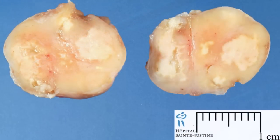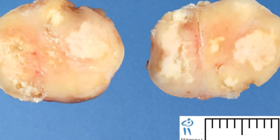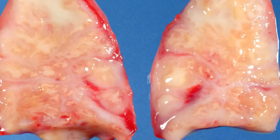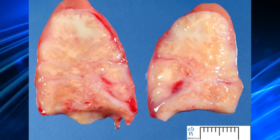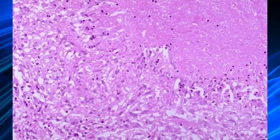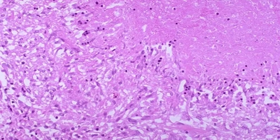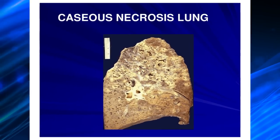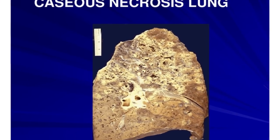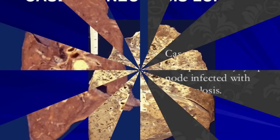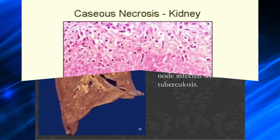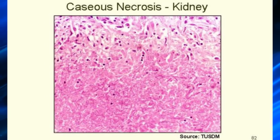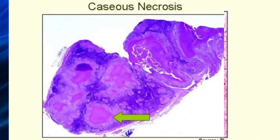Caseous necrosis is encountered most often in foci of tuberculous infection. Caseous means cheese-like, referring to the friable yellow-white appearance of the area of necrosis. Unlike coagulative necrosis, the tissue architecture is completely obliterated and cellular outlines cannot be discerned. The area of caseous necrosis is often enclosed within a distinctive inflammatory border.